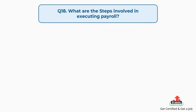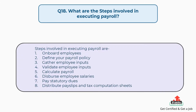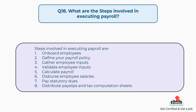Question number eighteen: What are the steps involved in executing payroll? The answer is, steps involved in executing payroll are: first, onboard employees; second, define your payroll policy; third, gather employee inputs; fourth, validate employee inputs.